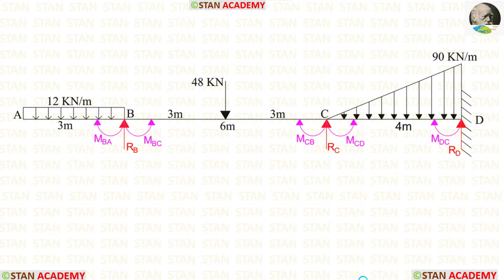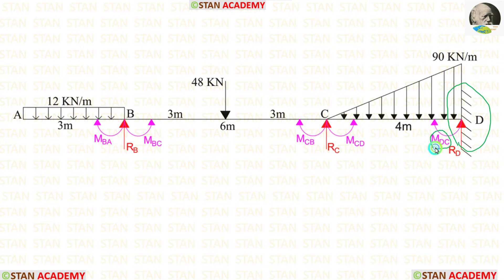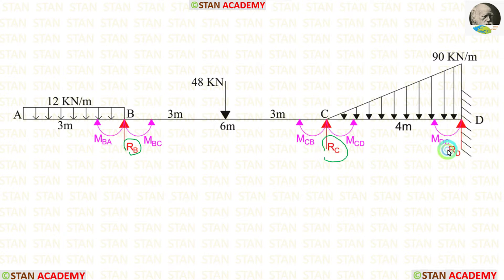In this analysis, we have to find 5 moments. In the joints there will be 2 moments each: in joint B, MBA and MBC; in joint C, MCB and MCD. In the fixed support at point D, there is the moment MDC. So totally we have to find 5 moments. We also have to calculate 3 reactions: RB, RC, and RD.